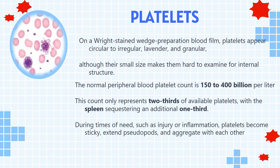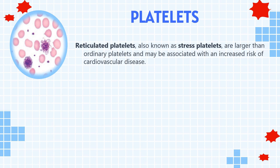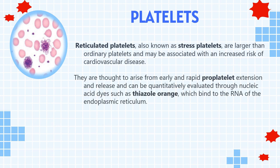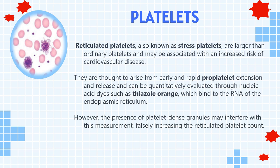During times of need, such as injury or inflammation, platelets become sticky, extend pseudopods, and aggregate with each other. Reticulated platelets, also known as stress platelets, are larger than ordinary platelets and may be associated with an increased risk of cardiovascular disease. They are thought to arise from early and rapid proplatelet extension and release, and can be quantitatively evaluated through nucleic acid dyes such as thiazole orange, which bind to the RNA of the endoplasmic reticulum. However, the presence of platelet-dense granules may interfere with this measurement, falsely increasing the reticulated platelet count.